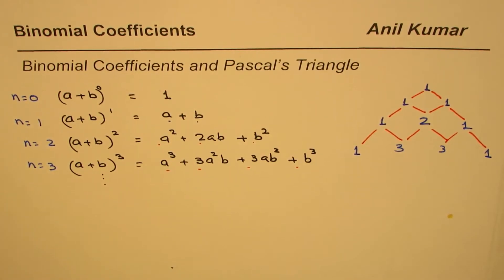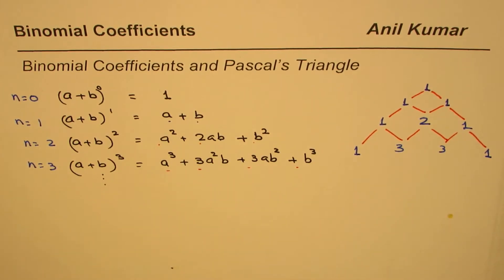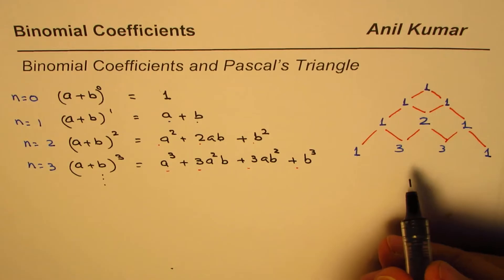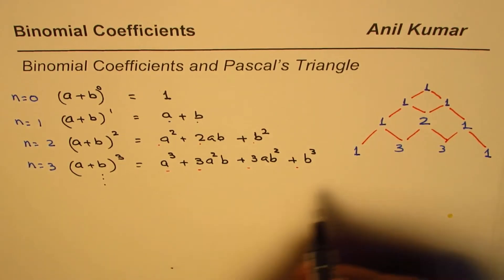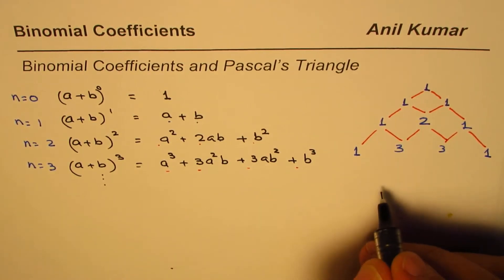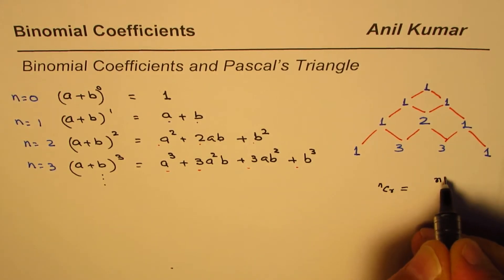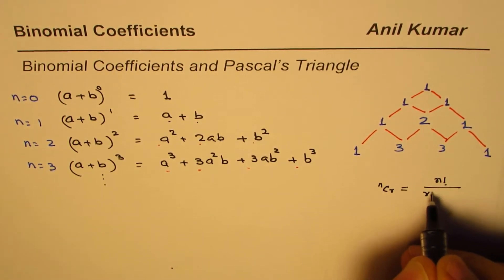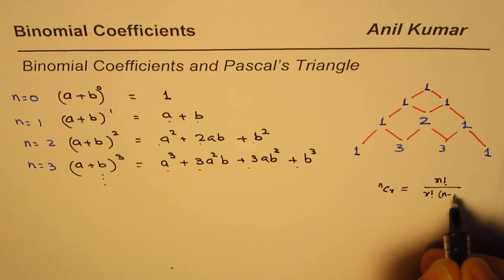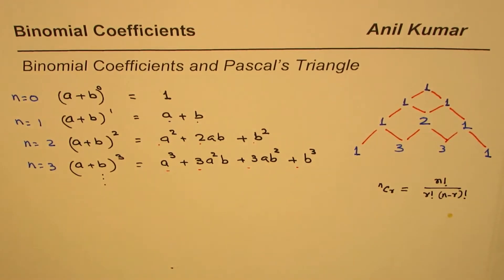We'll be referring to these coefficients as binomial coefficients. The term nCr is equal to n! divided by r! times (n − r)!. That is the formula for these terms.